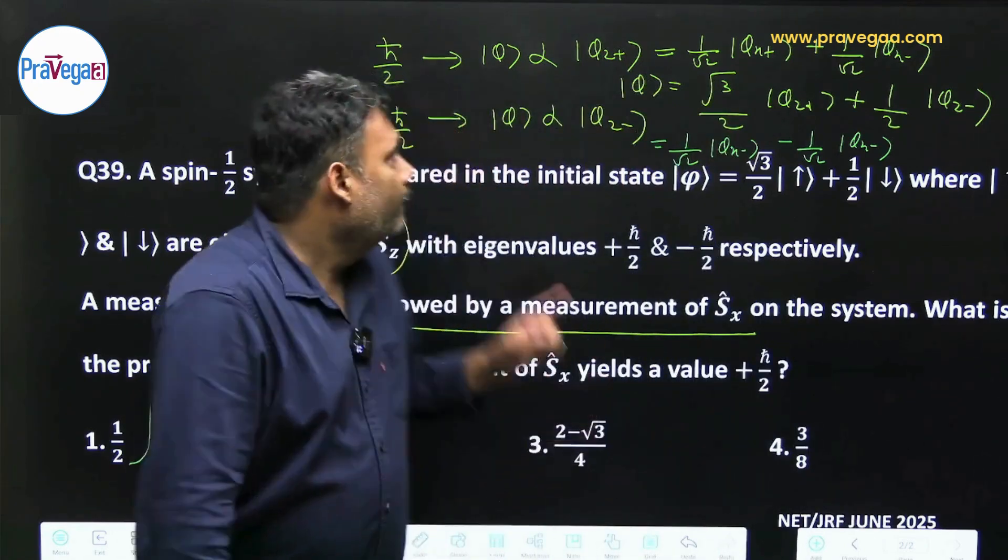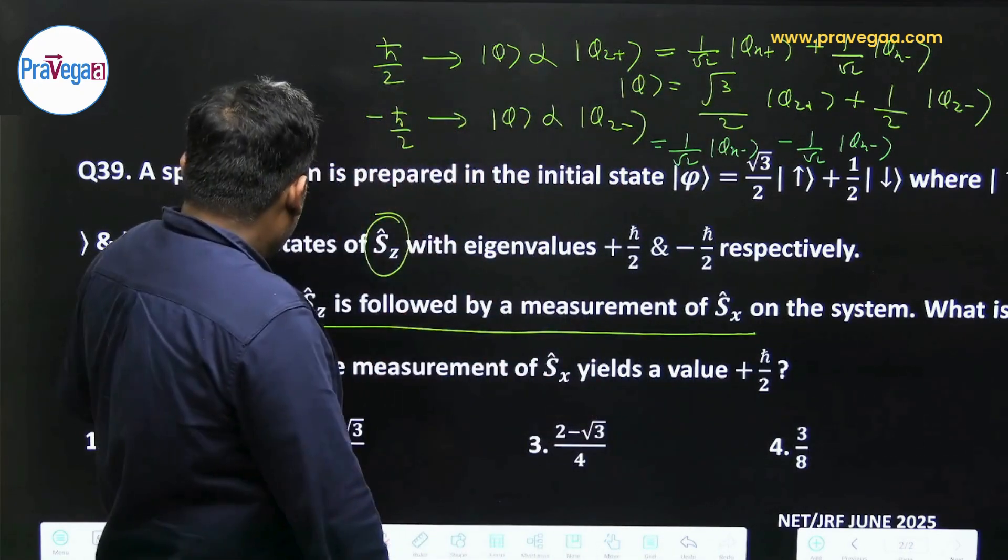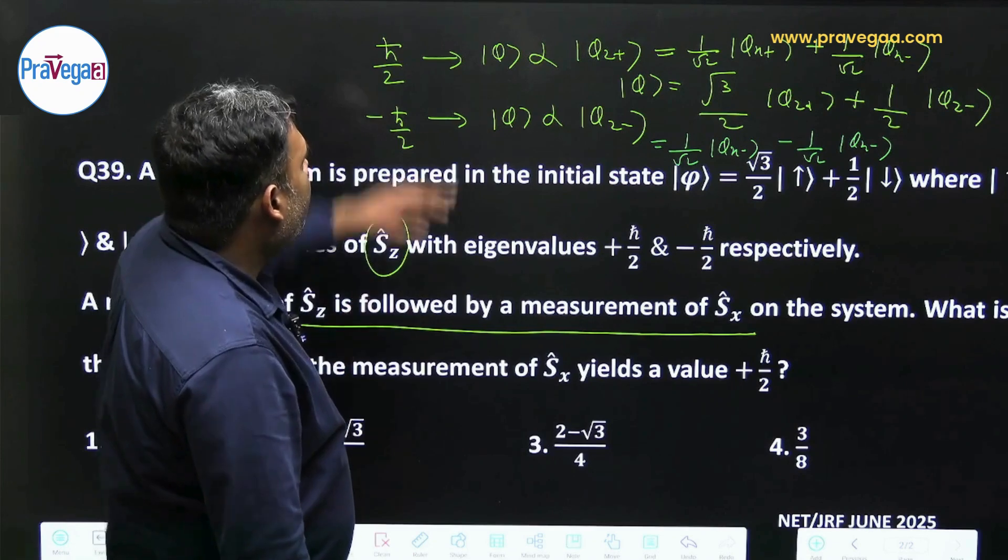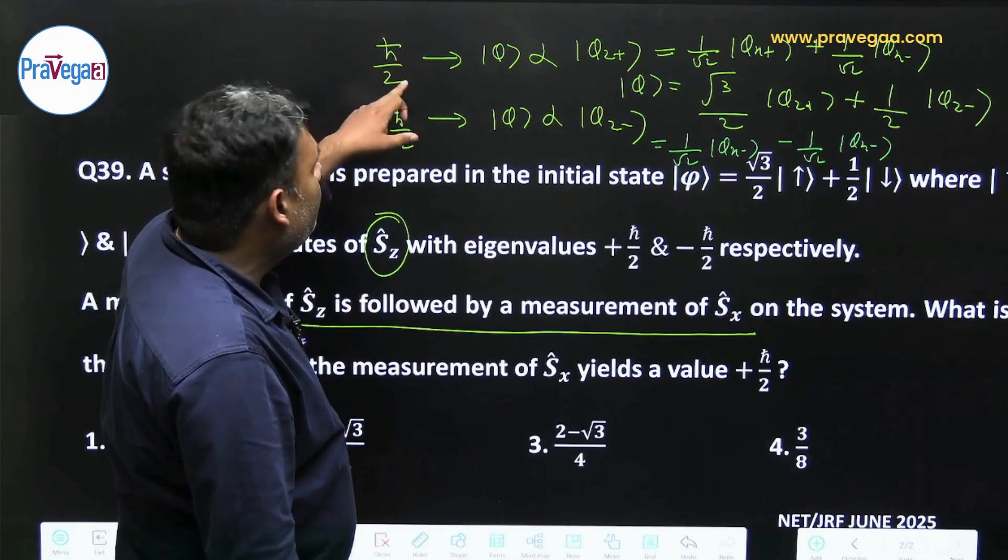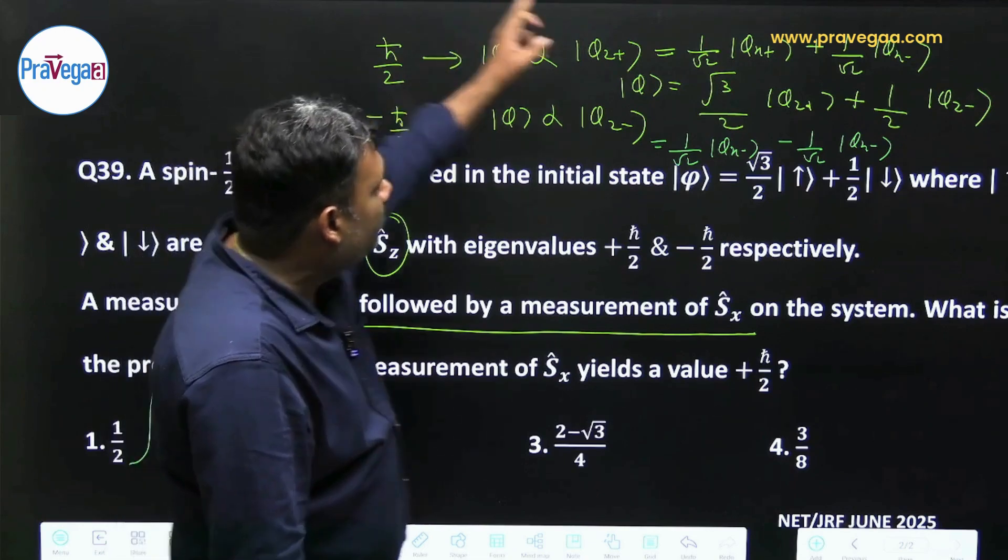So students, main phir se keh raha hun kya ho raha hai? First you are measuring Sz. So once you measure Sz, either you will get ℏ/2 or minus ℏ/2. If you are going to measure ℏ/2 then this φ is proportional to φz+.